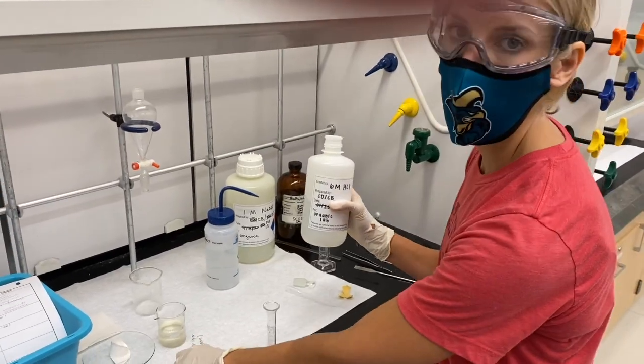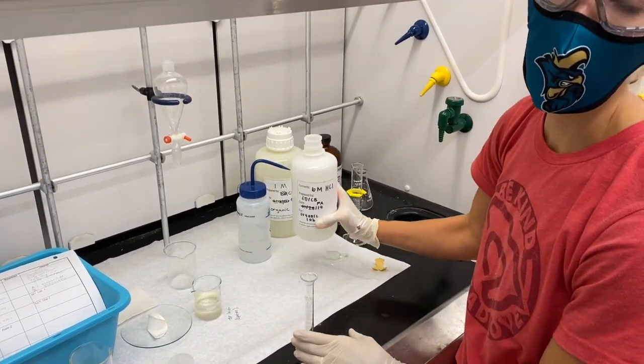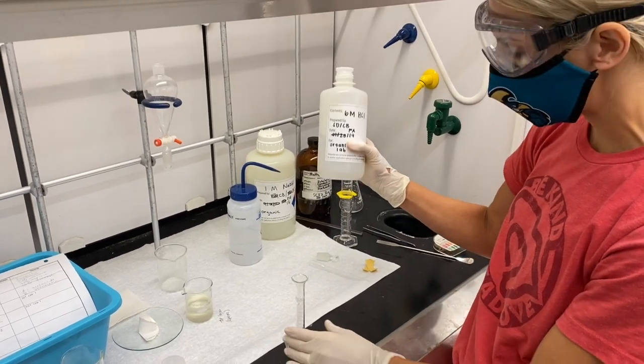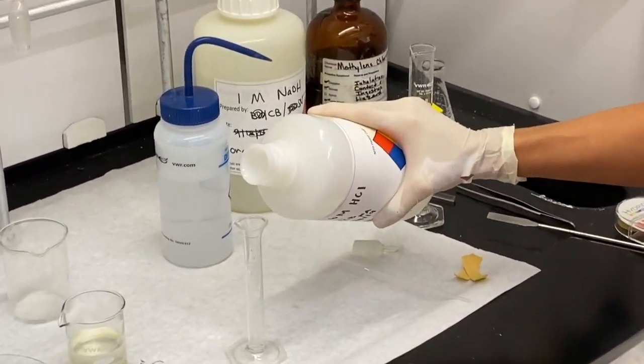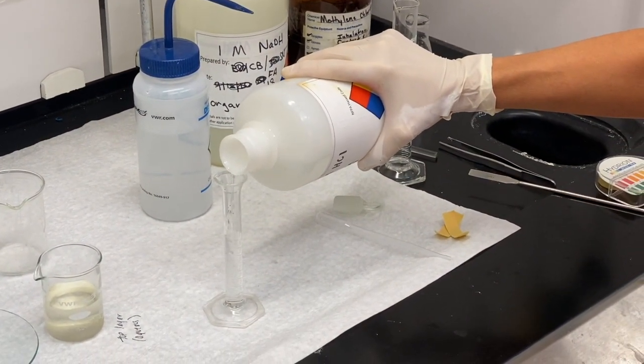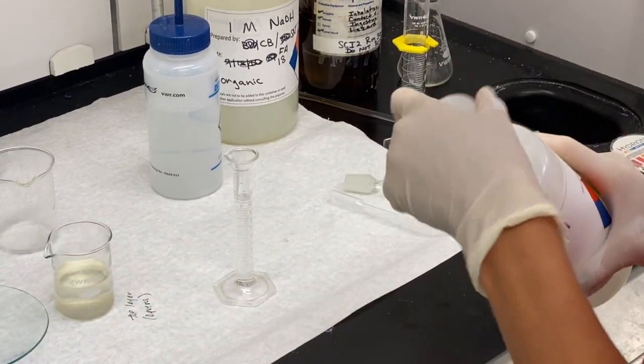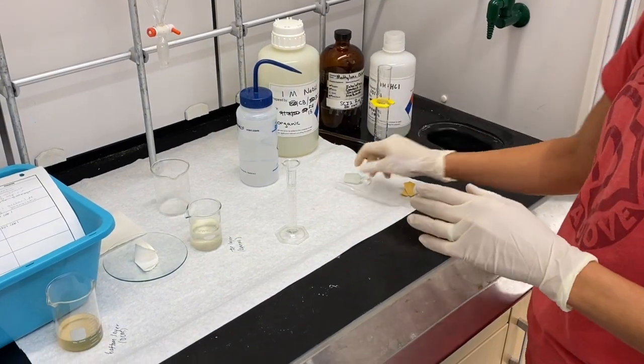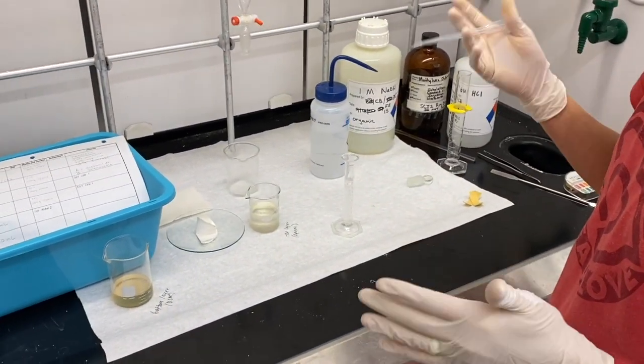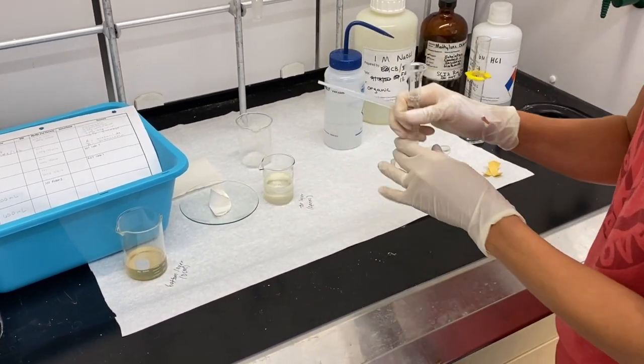Now we need to acidify our aqueous layer, which consisted of our sodium hydroxide. We're going to use HCl to neutralize that, and we're going to use about 10 milliliters. We're going to make sure and go slow, because acid-base reactions are exothermic and vigorous, so we don't want to just pour our 10 milliliters directly into this beaker.